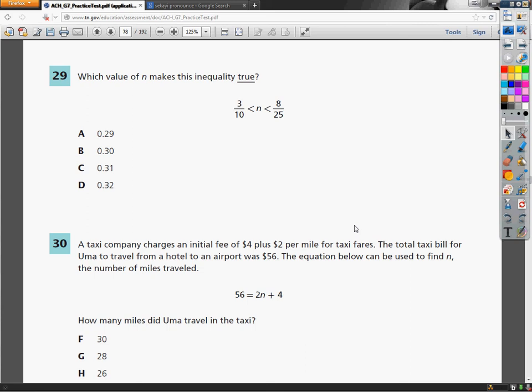So I see 3 tenths is less than n is less than 8 25ths. So really what I'm doing is looking for a decimal that goes in the middle of 3 tenths and 8 over 25. So let's figure out what 3 tenths and 8 over 25 are as decimals.